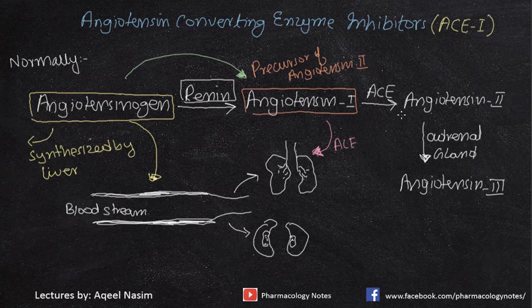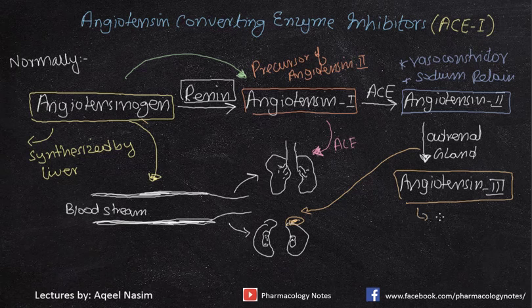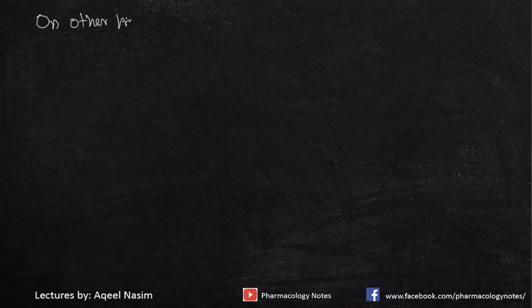Angiotensin 1 has no pharmacological or physiological action as such — it is considered the precursor of angiotensin 2. When angiotensin 1 reaches the lungs, the enzyme ACE converts it into angiotensin 2, which is a potent vasoconstrictor and causes sodium retention. Angiotensin 2 further stimulates angiotensin 3, which causes aldosterone secretion.